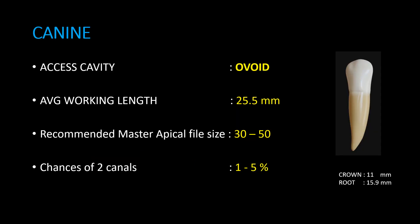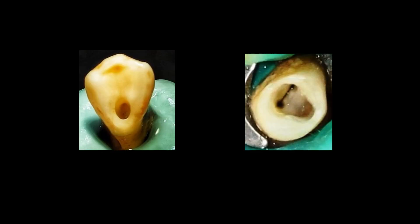Mandibular canine. Access cavity is ovoid shaped. Average working length is 25.5 mm. Recommended master apical file size is 30–50. Chances of two canals is 1–3%. Here, a pic shows ovoid shaped access cavity preparation of mandibular canine, and one with two canals connected by isthmus is shown.